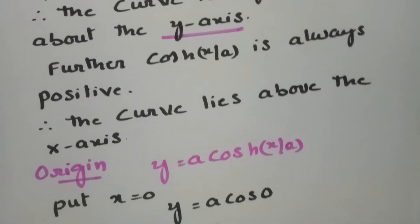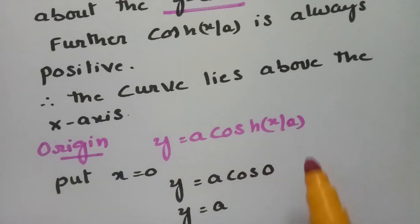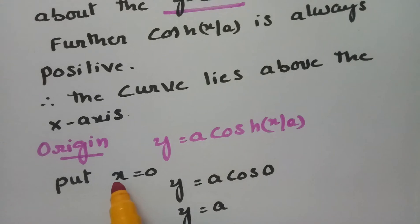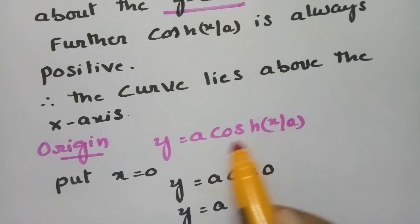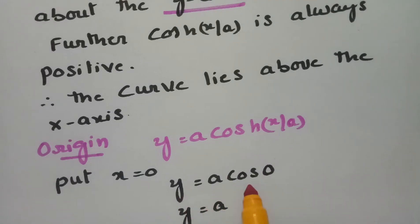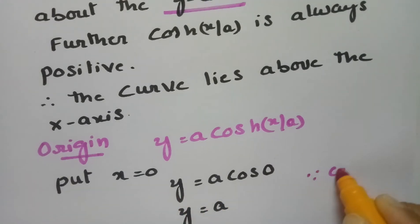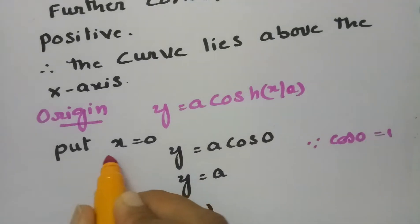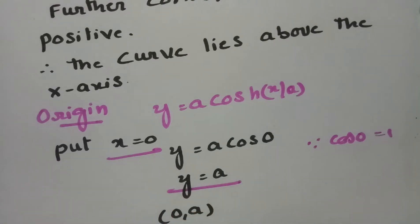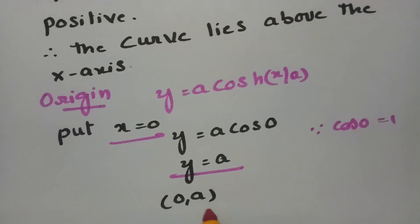Coming to the origin, the equation is y = a·cosh(x/a). If we put x = 0, this becomes y = a·cosh(0). Since cosh(0) = 1, we get y = a. So the point (0, a) is on the curve.